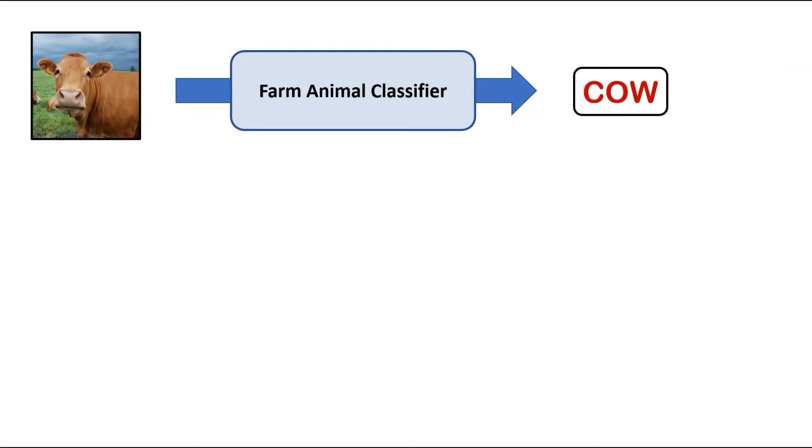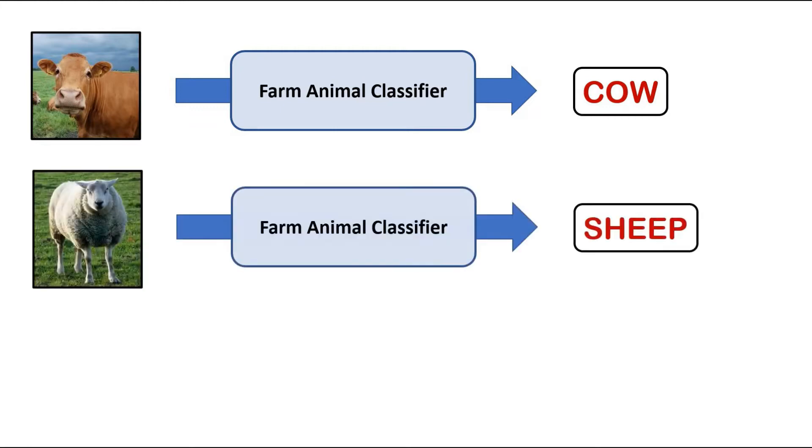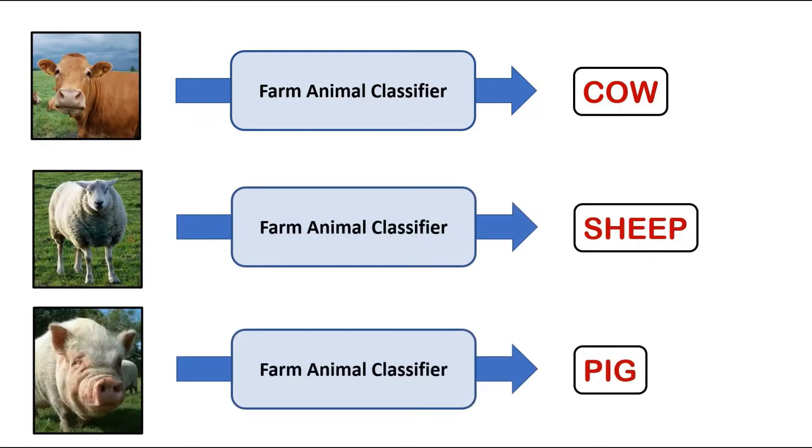Consider we have a trained machine learning model that is a farm animal classifier. For this input image, the classifier correctly identifies the animal as a cow. Similarly, the model is able to identify a sheep and also a pig.